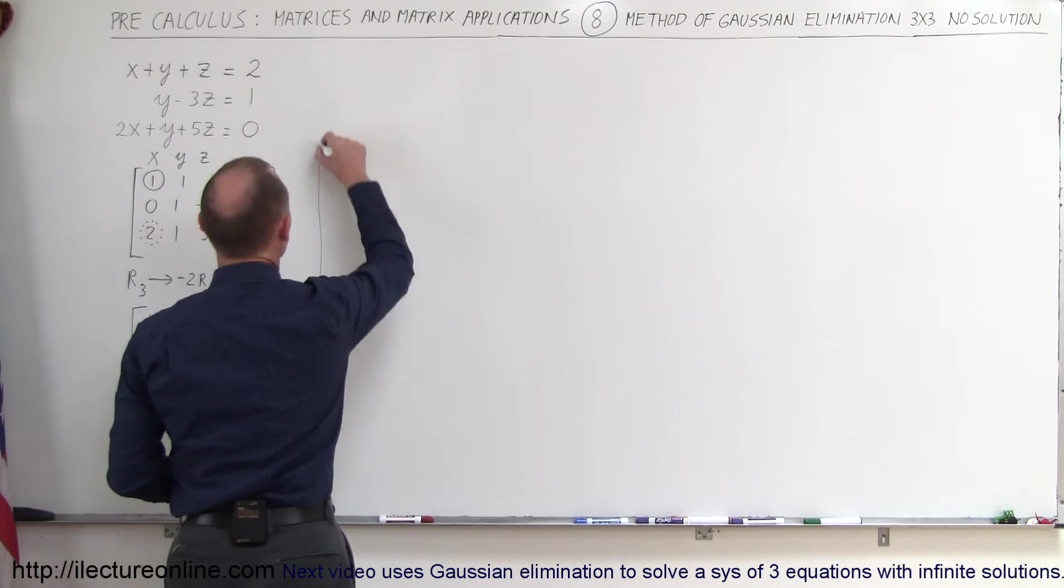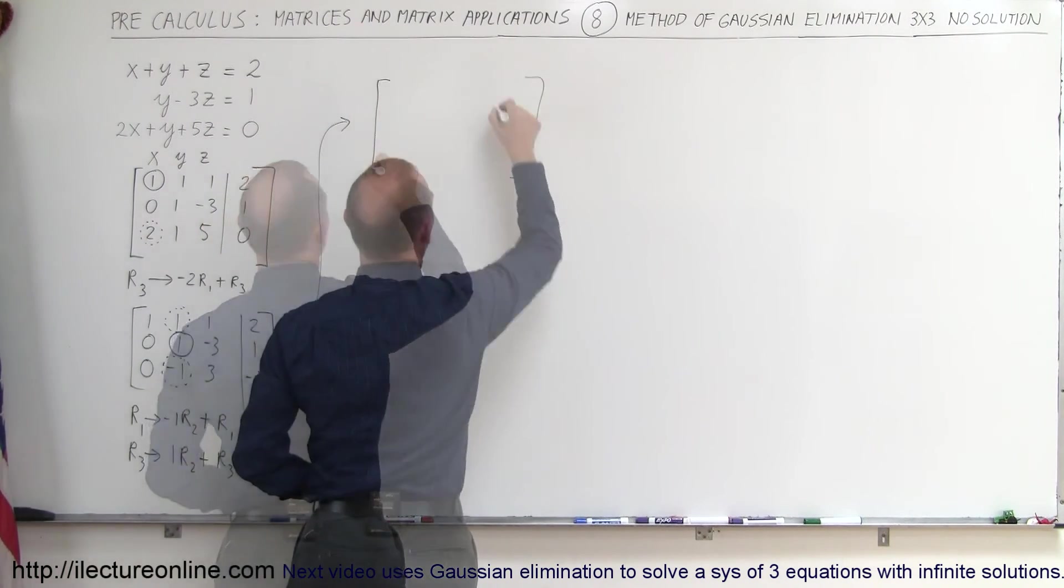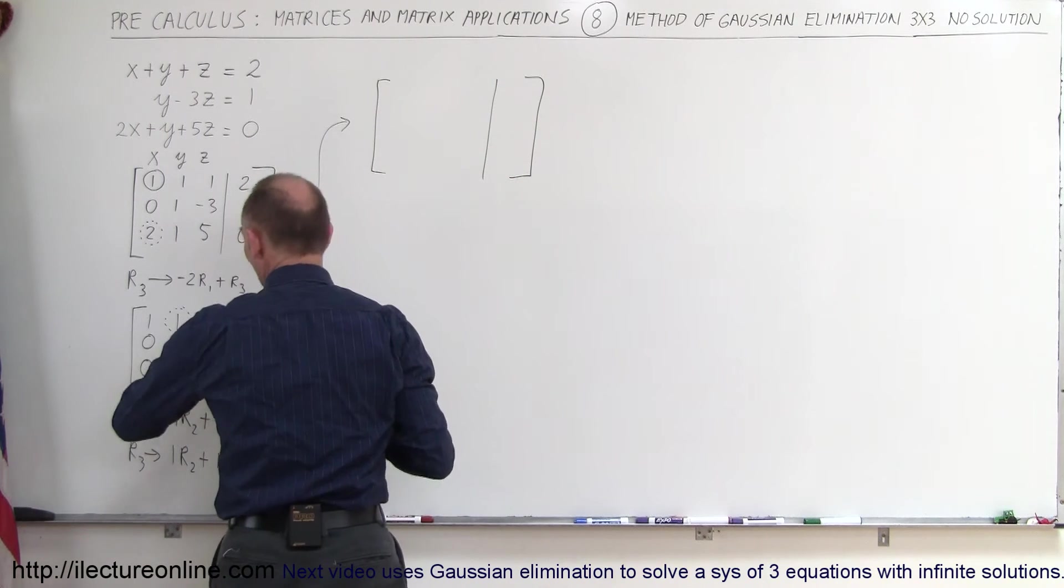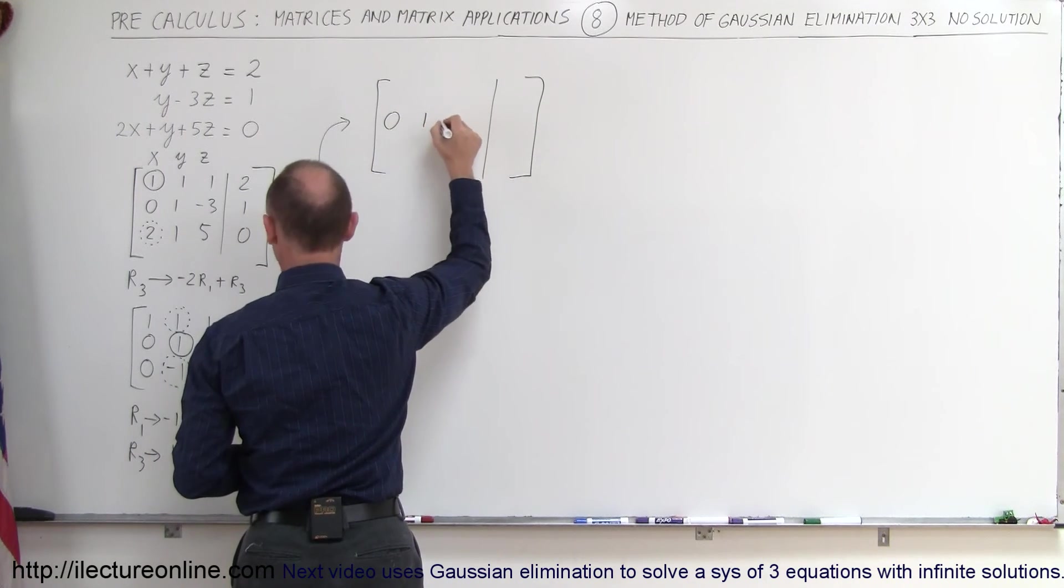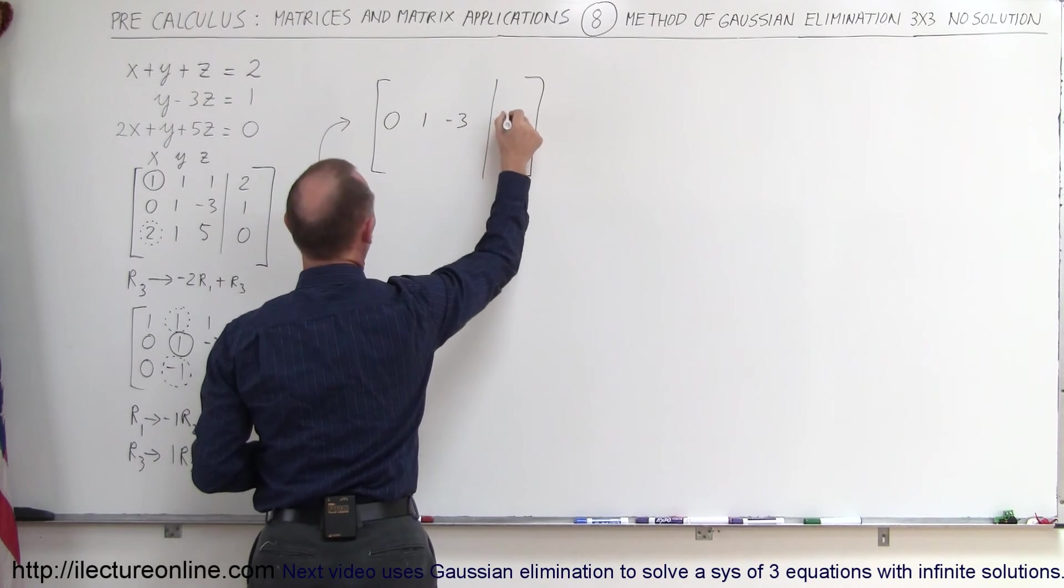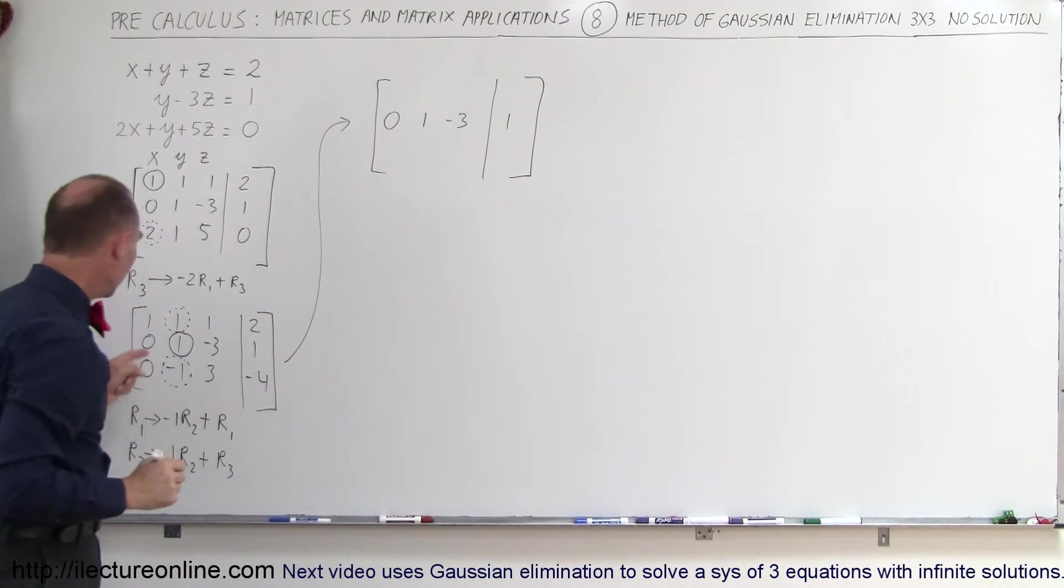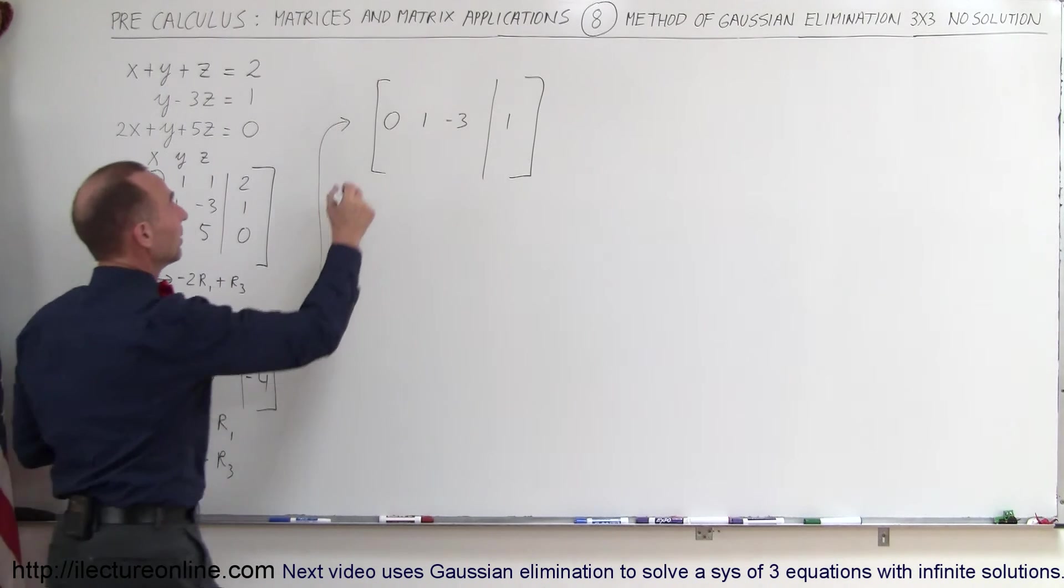And then what we have left is the following matrix. The row that does not change is the one that has the 1 in it. So 0, 1, negative 3, and 1. But the first row will change. Of course, this will remain a 1. That will not change.